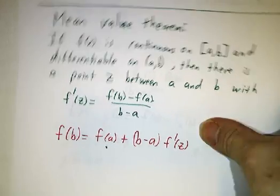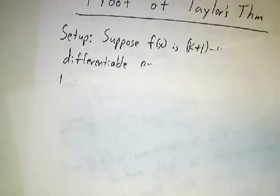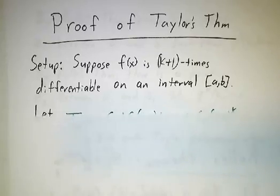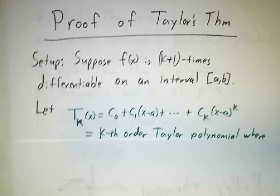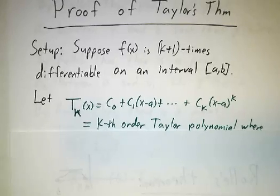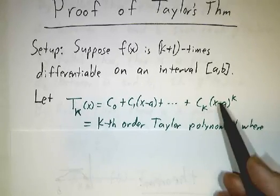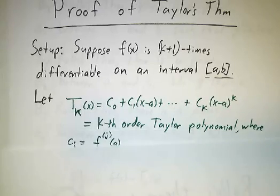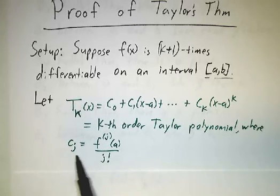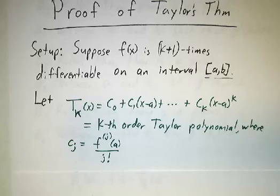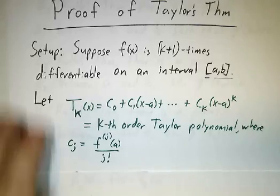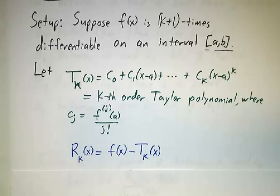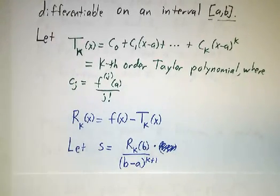So let's see why Taylor's theorem works. So our setup is we'll let Tk be the kth order Taylor polynomial, and we're doing it around a point a, and we're working on an interval from a to b. And so the jth coefficient is just going to be the jth derivative at a divided by j factorial. And then the remainder, the Rk is going to be the true function minus the kth order polynomial.